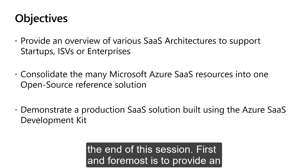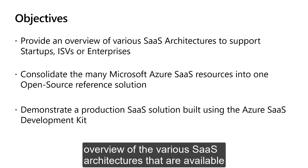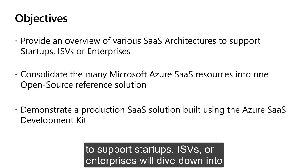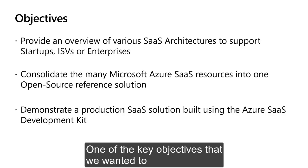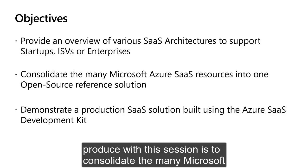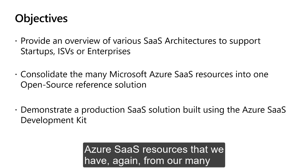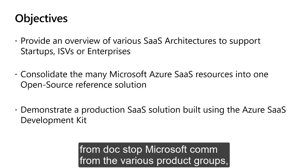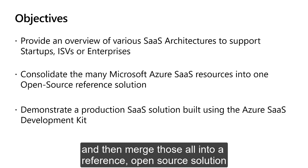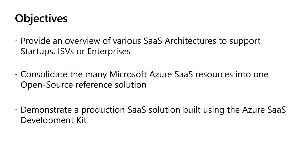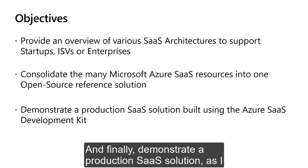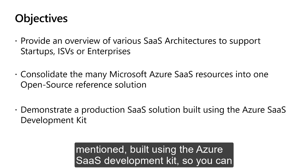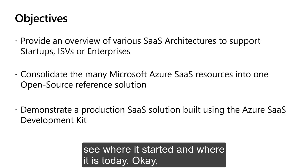Let's start with the three key objectives — the takeaways for you at the end of this session. First and foremost is to provide an overview of the various SaaS architectures available to support startups, ISVs, or enterprises. A key objective is also to consolidate the many Microsoft Azure SaaS resources — from the Azure Architecture Center, docs.microsoft.com, and various product groups — into a reference open source solution you can clone, build immediately, and deploy to Microsoft Azure. Finally, we want to demonstrate a production SaaS solution built using the Azure SaaS Development Kit, so you can see where it started and where it is today.